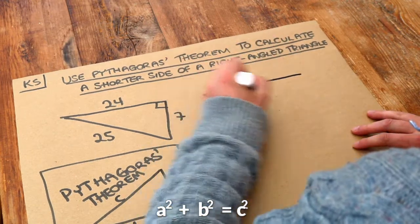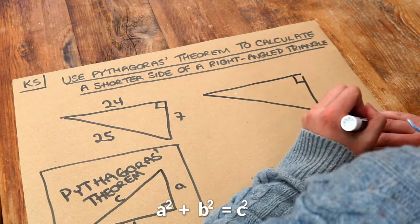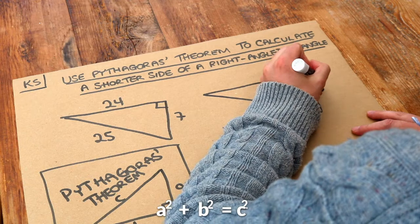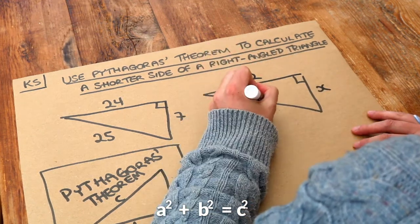But let's have a triangle with different sides. Let's say that we had this was X, this was 12, and this was 13.